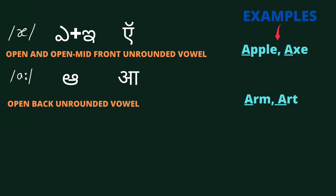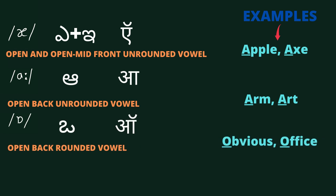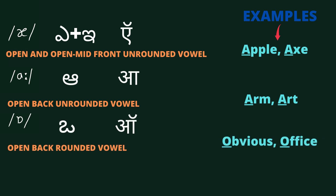Now we have the vowel sound /ɒ/. It is an open back rounded vowel. Examples are: obvious, office.